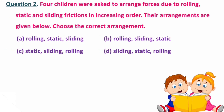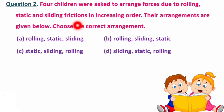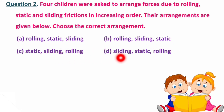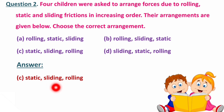Next question: four children were asked to arrange forces due to rolling, static, and sliding friction in increasing order. Their arrangements are given below. Choose the correct arrangement. Ab four children jo na, wo static friction, rolling friction, aur sliding friction in increasing order mein karna hai. Sabse kum kunsa friction hota hai, then usse zyada, then maximum? Options are: (a) rolling, static, sliding; (b) rolling, sliding, static; (c) static, sliding, rolling; (d) sliding, static, rolling. Correct answer is: static, sliding, and rolling.